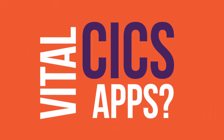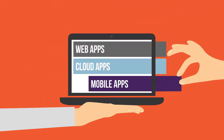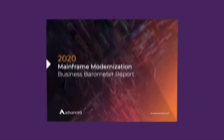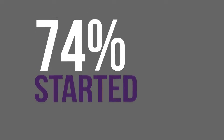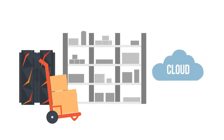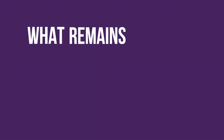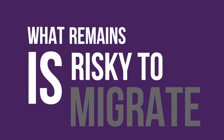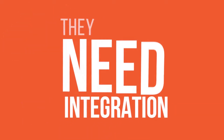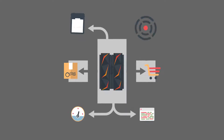Do you have mission-critical CICS applications that you need to integrate with web, cloud, or mobile applications? We're in the era of the long tail of the mainframe's existence. A recent mainframe modernization report shares that 74% of organizations have started a modernization program but failed to complete it. Many enterprises have already moved easy-to-migrate CICS applications to other platforms. What remains is complex and risky to migrate, so CIOs have concluded the mainframe is the ideal platform for them. These enterprises don't need migration options but elegant integration solutions to easily and affordably let the mainframe fully participate in today's hybrid IT environment.